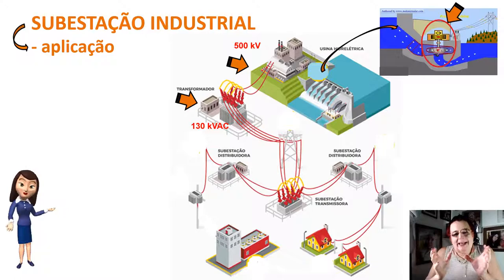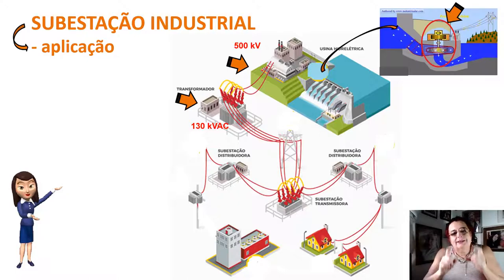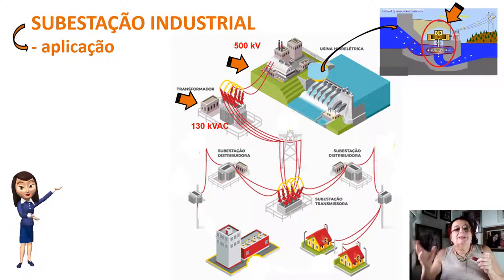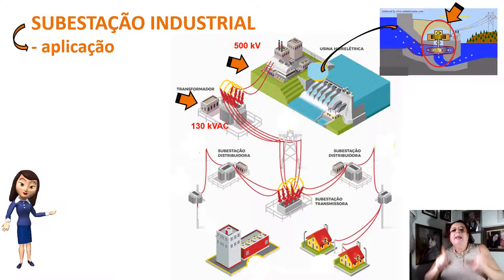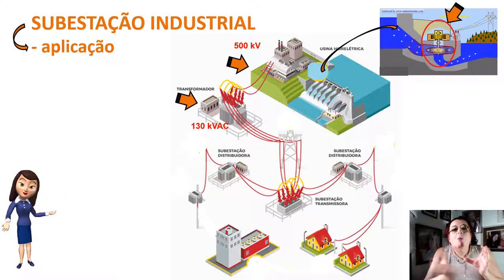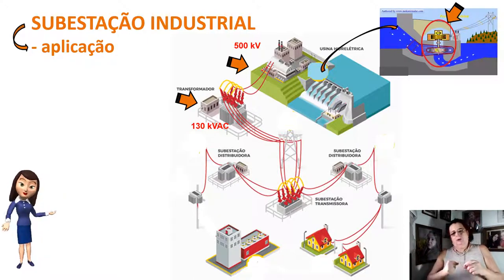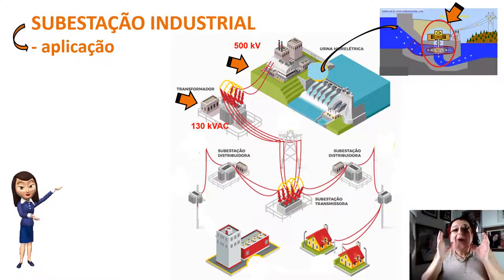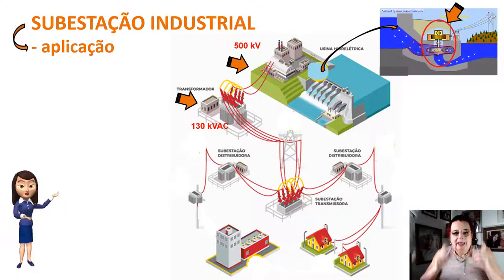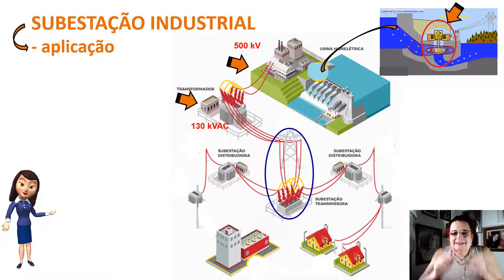Esses 130 mil volts são ajustados para corrente alternada. Os cabos de transmissão que vemos nas estradas do Brasil estão usualmente com tensão de aproximadamente 130 mil volts. Na entrada das cidades existem subestações transmissoras que captam esses 130 mil volts e rebaixam essa tensão.